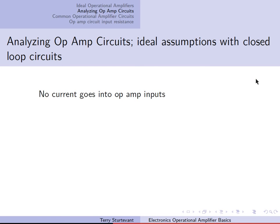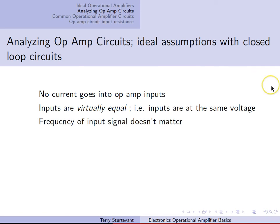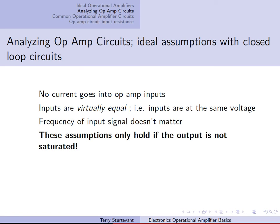How to analyze op-amp circuits with feedback: there are three assumptions that are made. No current goes into the op-amp inputs. The inputs are virtually equal, which means the inputs are at the same voltage. And the frequency of the input signal doesn't matter. These assumptions only hold if the output is not saturated — as soon as the output reaches saturation, those assumptions will no longer hold. If the output is not at either of the rails, those assumptions hold; if the output is at one of the rails, they do not hold.